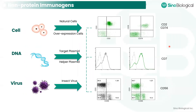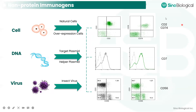For some molecules, the protein is not easy to obtain, so there are other ways using non-protein immunogens for antibody generation. These include cells — either natural cells or overexpression cells — and we can also immunize animals with DNA containing targeting sequences, or use viruses with targeting sequences for immunization. Several molecules have been successfully generated by these types of antigens for FACS applications.